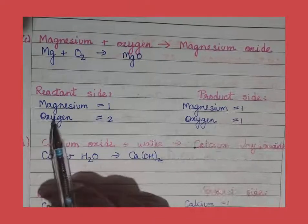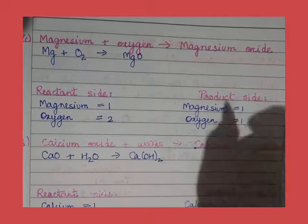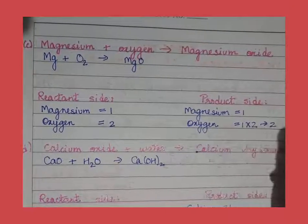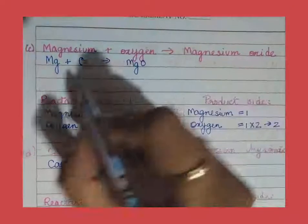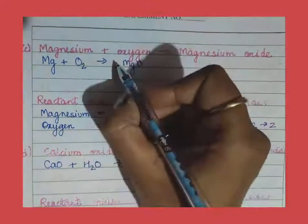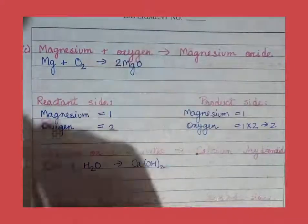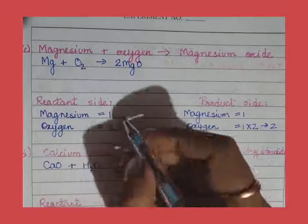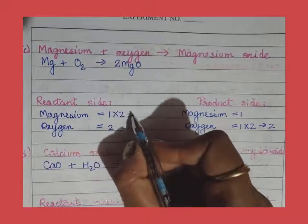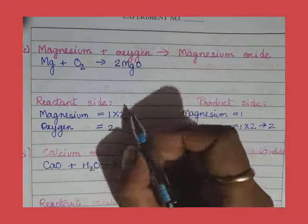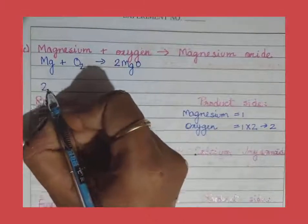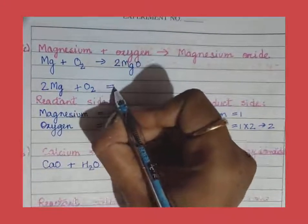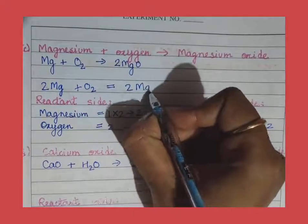On the reactant side oxygen is 2, but on the product side it is 1. So we need to multiply MgO by 2 to make the oxygen on the product side equal to 2. But when we multiply MgO by 2, magnesium also becomes 2. So on the reactant side we also need to multiply magnesium by 2. The balanced chemical equation will be 2Mg + O₂, then you put the sign of equality, giving 2MgO.